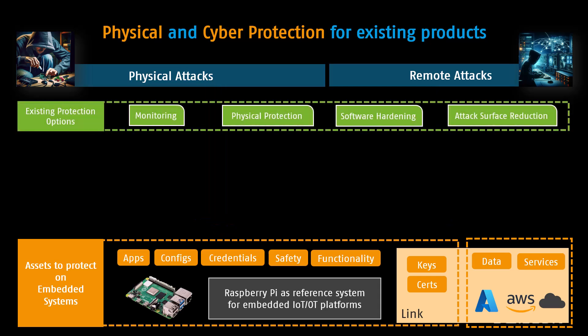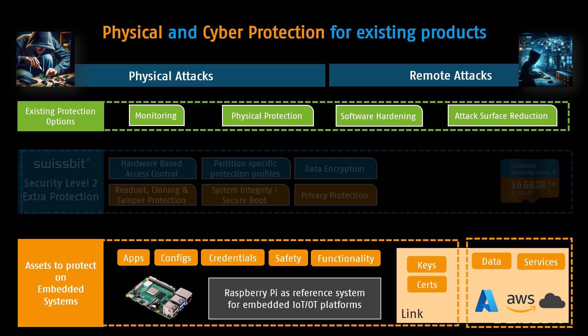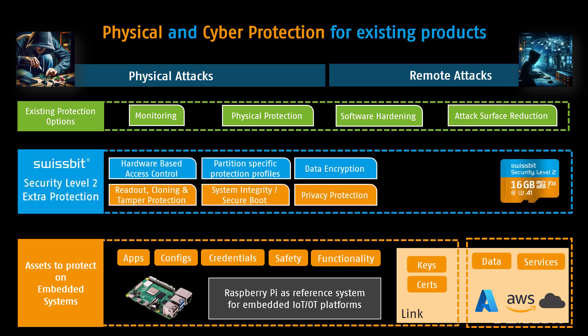For remote attacks, standard practices like software hardening and reducing the attack surface by disabling unnecessary services are common. But physical security is also essential, especially for systems using micro SD cards like the Raspberry Pi. With our Security Level 2 card, you get an additional layer of protection. Even if someone has physical access to your card, they can't read or modify the data, thanks to hardware-based access control and AES encryption.